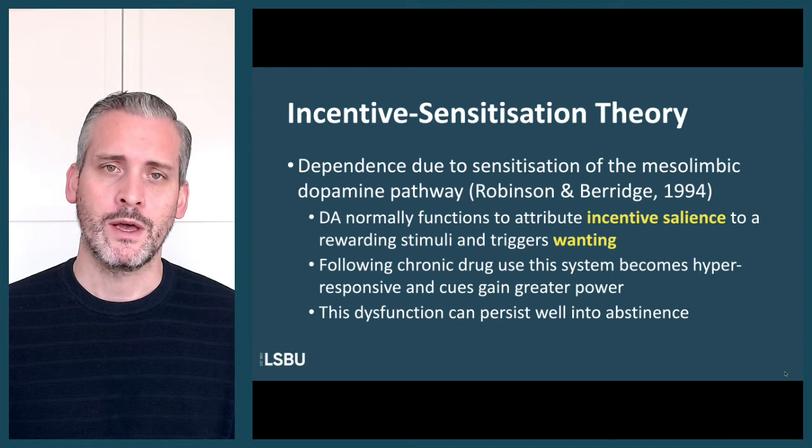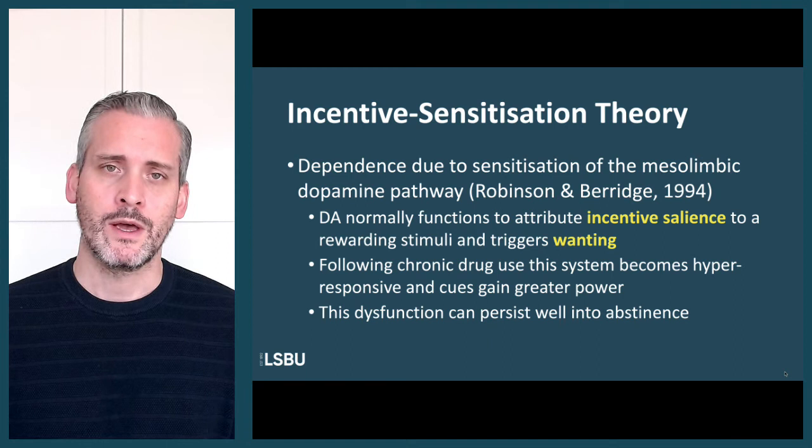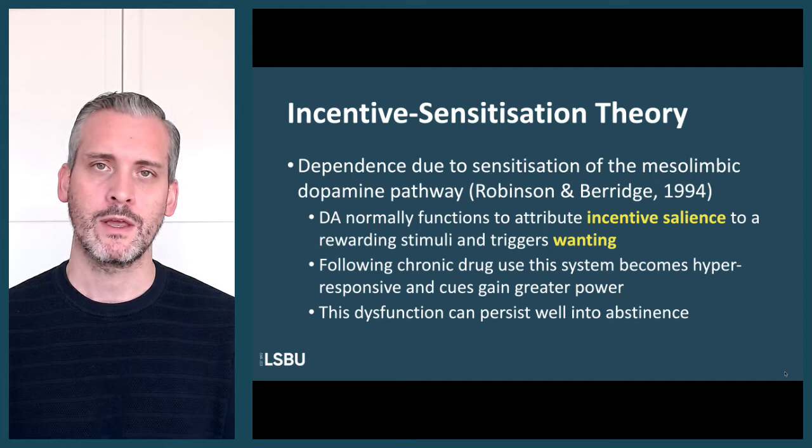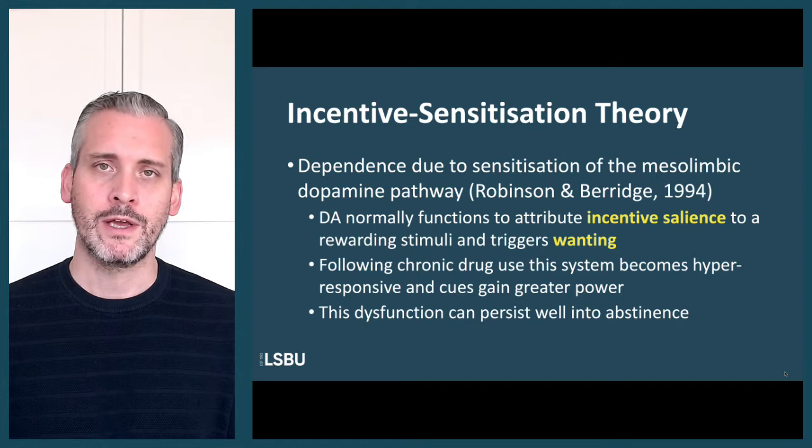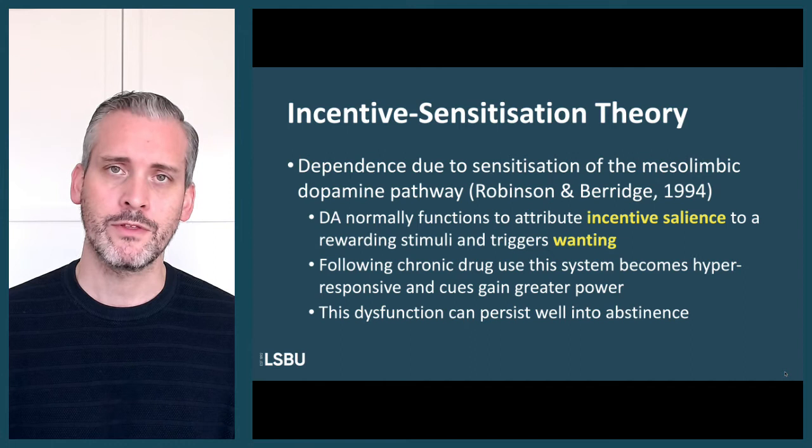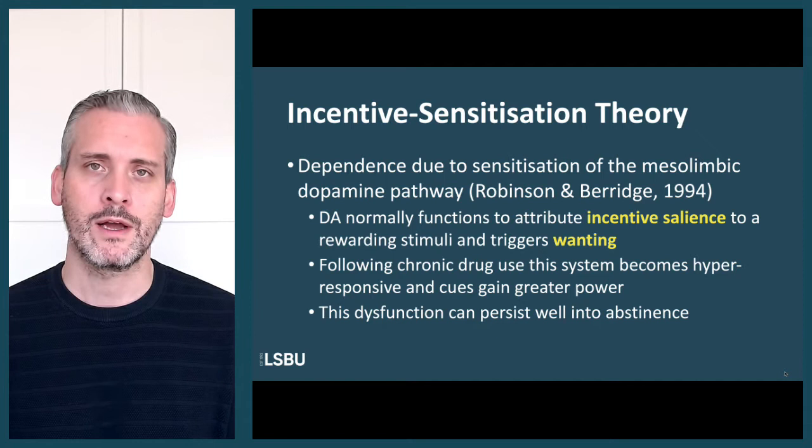We learn through association with reward and behaviour — that's operant conditioning. You do a particular behaviour, engage in a certain action, and that leads to a reward. We also know that this leads to the release of dopamine in the dopaminergic reward pathways. That's a completely ordinary process — a normal way in which we learn to associate rewards with certain actions, which increases the likelihood that we will do those things again.